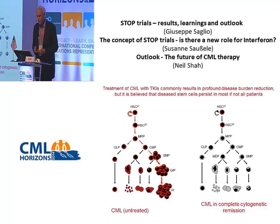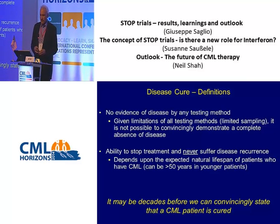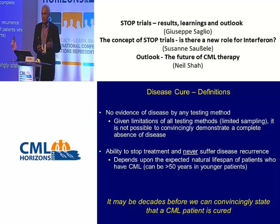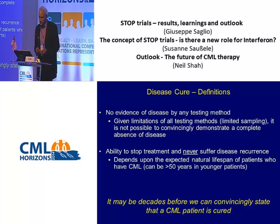Obviously, if we could eradicate that population, we could presumably affect true disease cure. So what do we mean by disease cure? Cure can be defined as no evidence of disease by any testing method, but our limits of detection are always going to be limited — we will never be able to look in every last cell for the presence of BCR-ABL in a living individual. Another definition of cure is the functional cure, or the ability to stop treatment and never suffer disease recurrence.